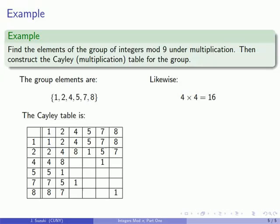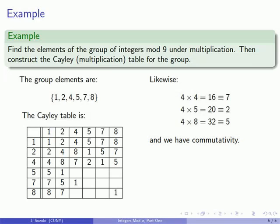Likewise 4 times 4 is 16 which we can reduce, 16 is congruent to 7, 4 times 5 is 20 which is congruent to 2, 4 times 8 is 32 which is congruent to 5 and commutativity allows us to find 3 more products.